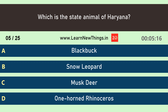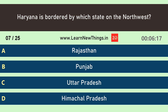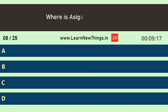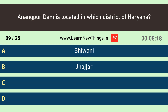Which is the state animal of Haryana? Answer 3: Black Buck. Which city is known as the Millennium City of India? Answer 4: Gurugram. Haryana is bordered by which state on the North West? Answer: Punjab. Where is Asigad Fort located? Answer 5: Hansi.